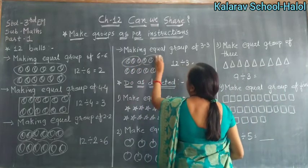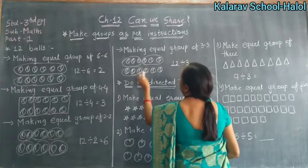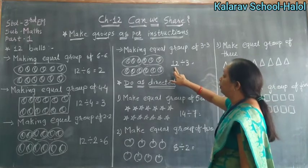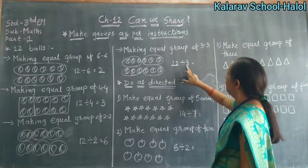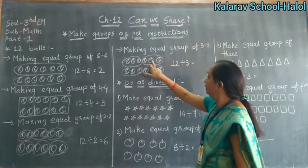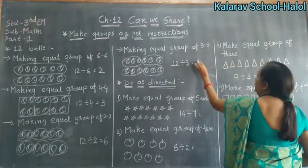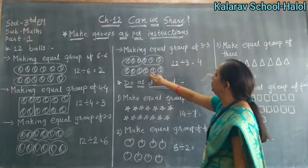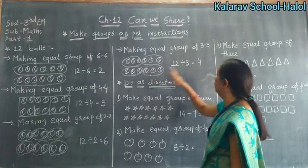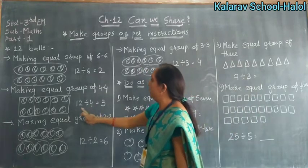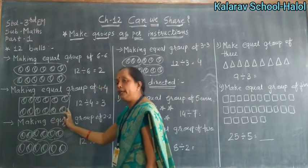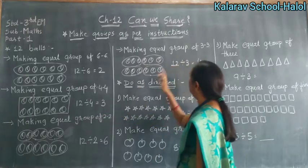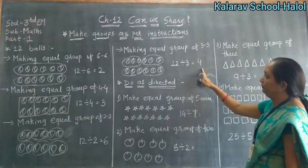3 ka group banayenge: 1, 2, 3, 4. Total group kitne banayenge? 4. Here 3 ka group banayenge to 4 group banayenge. Or here 4 ka group banayenge to kitne group banayenge — 1, 2, or 3 group banayenge. So if we have 3 groups, then we have 4 groups. Understand?